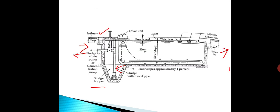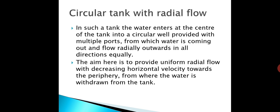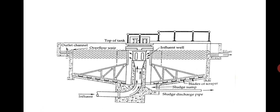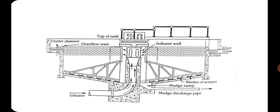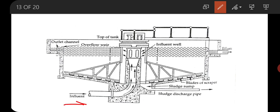The next type of tank is circular tank with radial flow. This is the diagram of a circular tank. In this type, this is the influent end from where the raw water enters into the influent well. There are multiple ports from which water comes out and flows radially in all directions equally. The water thus flows horizontally and radially from the center towards the periphery of the circular tank.